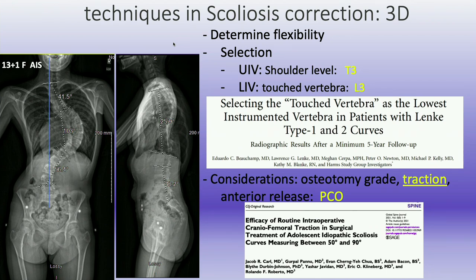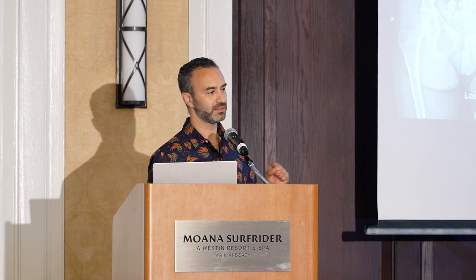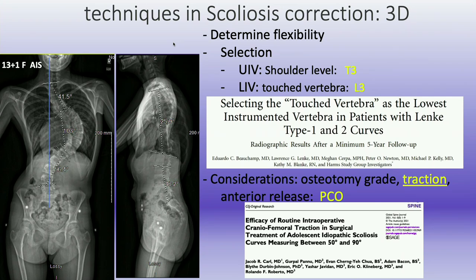Regarding shoulder balance: in general, a left shoulder low at T4 is a good place to be, T3 if they're level, and if the left shoulder is higher, maybe T2. We try not to go to T2 a lot at our institution. T3 is a favored level for a curve like this. The LIV would be L3. Other considerations include osteotomy grade.